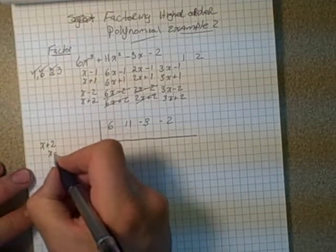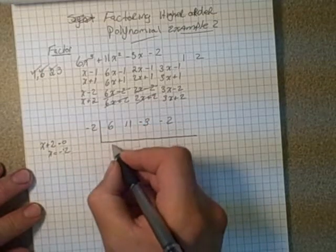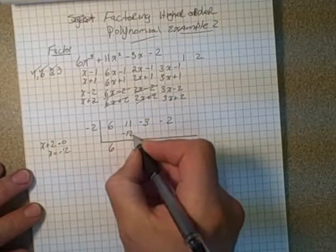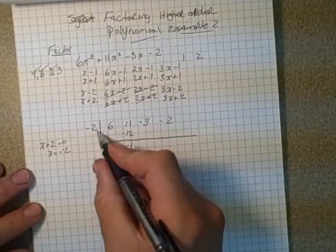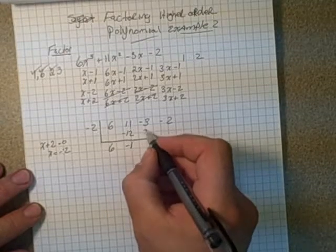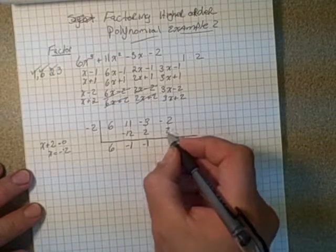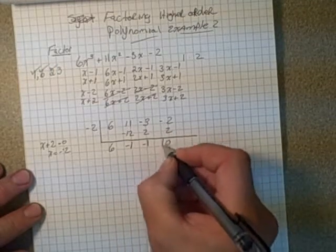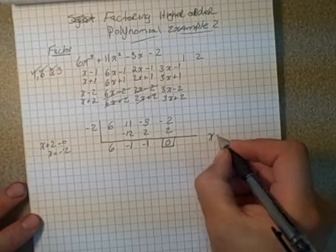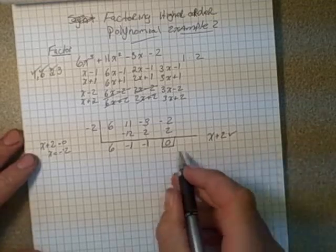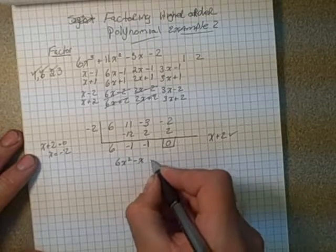So X plus 2 means X equals negative 2. Negative 2 goes here. So 6, bring it down, negative 12. Negative 1. By adding these two together, then negative 2 times negative 1 is 2. Add these two together to get negative 1. Multiply those two together to get 2. This gives us 0, a remainder of 0. So we know that X plus 2 is a factor.